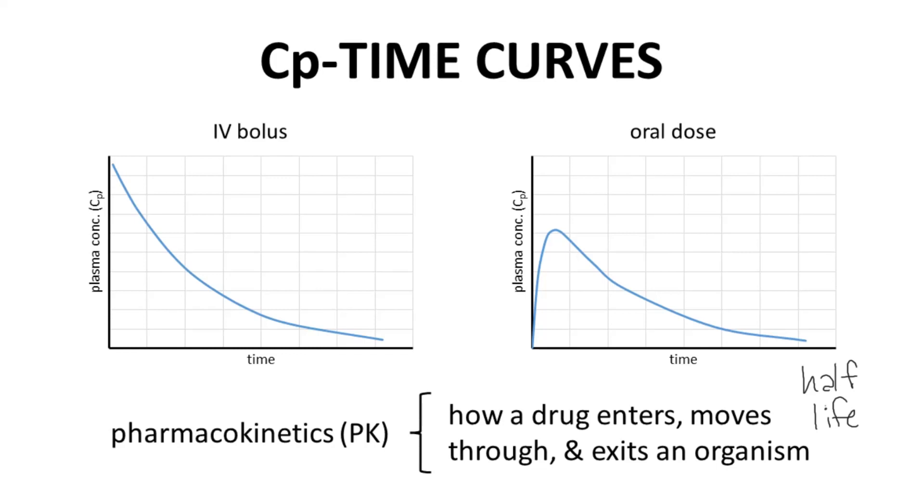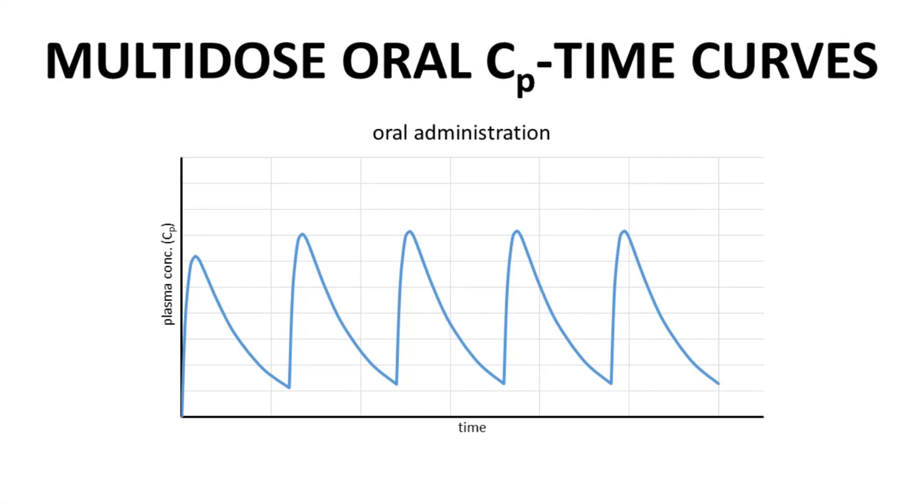Since this course emphasizes oral drugs, let's look at CP time curves for a multi-dose oral drug. Here is a multi-dose curve for an oral drug. Each rise and fall corresponds to a separate dose of the drug. This curve shows five doses.